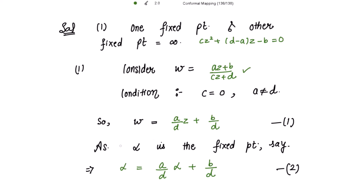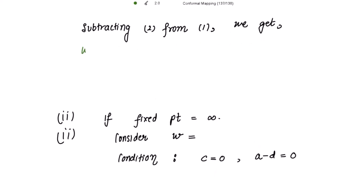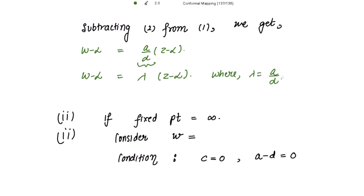Subtracting equation 2 from equation 1, we get w − alpha = (a/d)(z − alpha), which is of the form w − alpha = λ(z − alpha), where lambda = a/d. This is the required form of the bilinear transformation when one fixed point is finite (alpha) and the other is infinity.